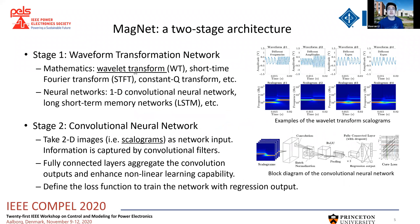For the first stage, in order to extract information in the signals, there are many mathematical tools available. In this work, we selected the Wavelet Transform. As mentioned, it can also be replaced by other neural network structures, which will be explored in the future. The Wavelet Transform converts the time series into a 2D scalogram, as shown in the examples on the right-hand side. We then implemented a convolutional neural network at the second stage, which can take these 2D images as inputs, capture the information, and build up the desired nonlinear regression relationship.